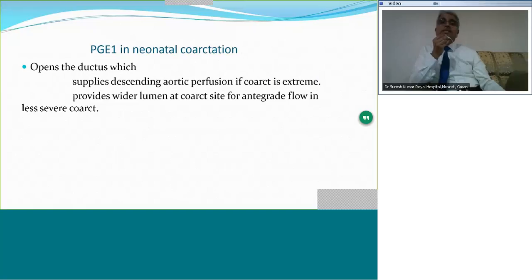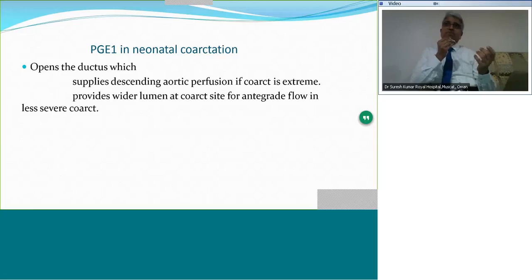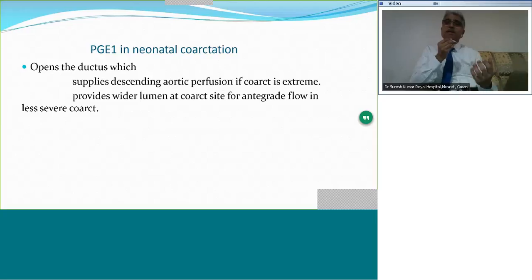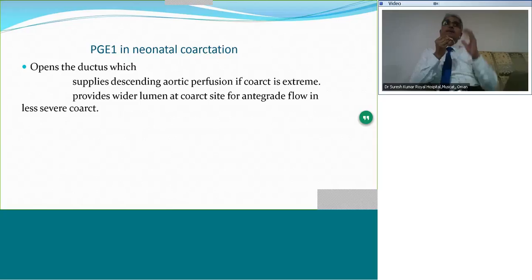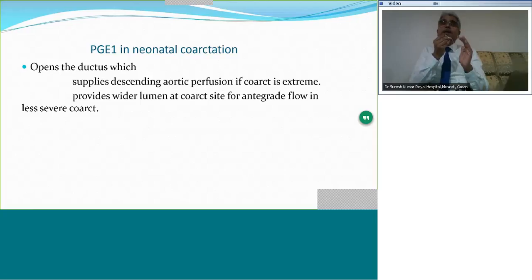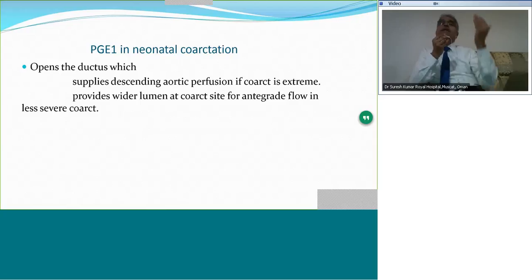What does prostaglandin do in neonatal coarctation? It opens the duct, which can supply the descending aortic perfusion if the coarct is extreme. More often, it provides a wider lumen at the coarctation site for antegrade flow in less severe coarcts. When the duct is open, the ductal ampulla is wide and positioned right opposite the coarctation shelf, allowing a greater transverse diameter for antegrade flow at the level of the coarctation.